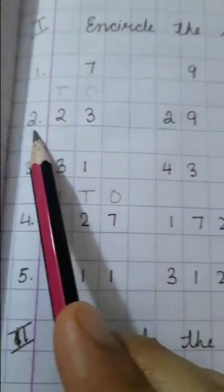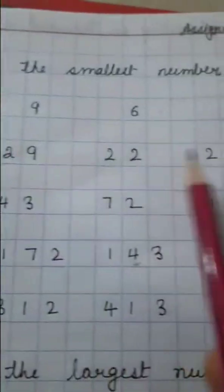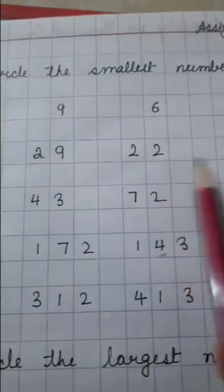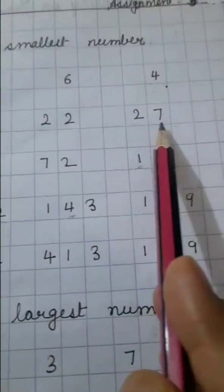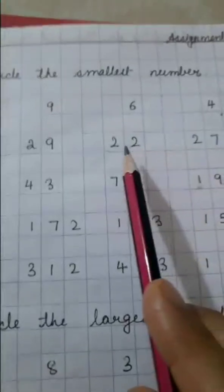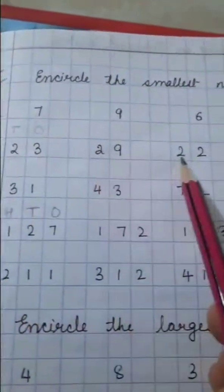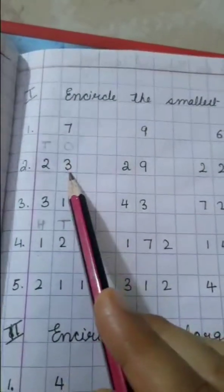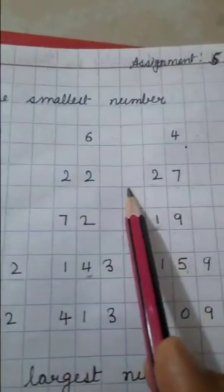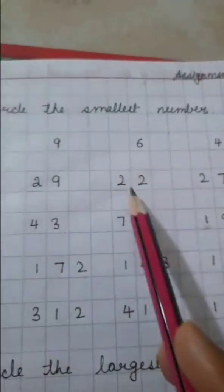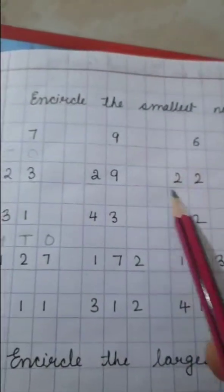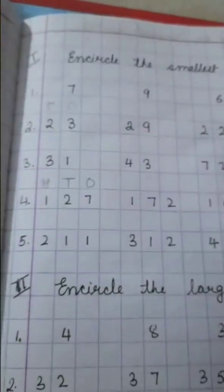Now see, come to the next question. This is 2 digit number. Now you will not see the place, the number in the 1s digit. You will see the number in the 10s digit first. See, all the numbers are same. And now compare the 1s place number 3, 9, 2, 7, which is smaller? 2. So see, 22 is the smallest number over here in this group.